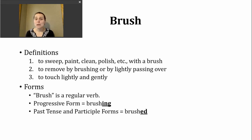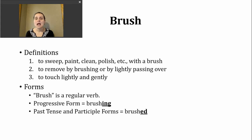Brush is a regular verb. To make the progressive tense, we just need to add -ing to make 'brushing.' To make the past and participle forms, we need to add -ed. Because this verb ends in an unvoiced 'sh' sound, the -ed is going to make a 't' sound: brushed.